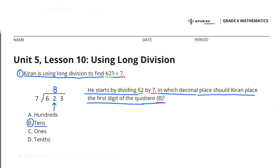He starts by dividing 62 by 7. In which decimal place should Kieran place the first digit of the quotient, 8? Kieran should place the 8 in the 10s place.